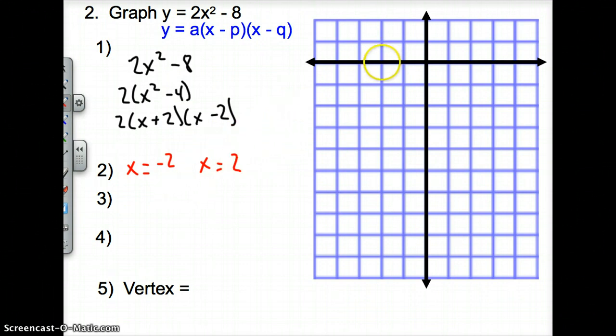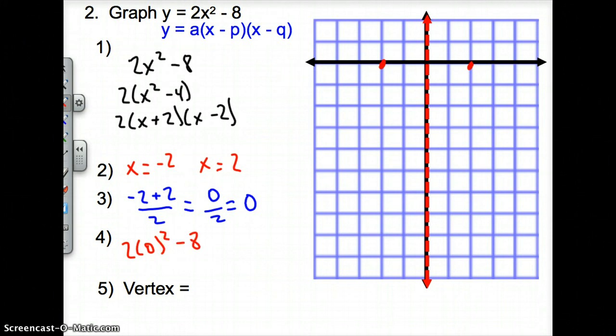So let's go ahead and put those on the graph. We go over negative 2, put a point. Then we go over to positive 2 and put a point. Now we have to find our axis of symmetry by adding our two guys here together. So it's going to be negative 2 plus 2, divide that by 2, and that's going to give us 0 over 2, which is 0. Now I know that my axis of symmetry is 0, so I'm going to plot my axis of symmetry right at 0. Now, to find my vertex, I have to plug this 0 into the x of my original equation. So I'm going to have 2 times 0 squared minus 8. And so this is 0 minus 8, which is a negative 8. So now my vertex is 0, negative 8.